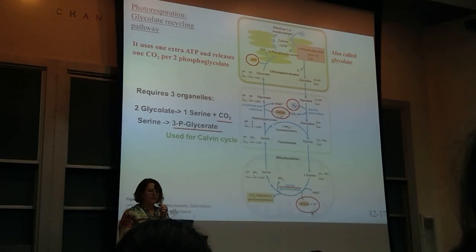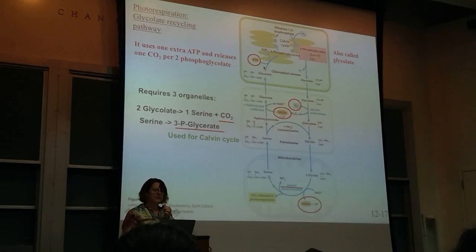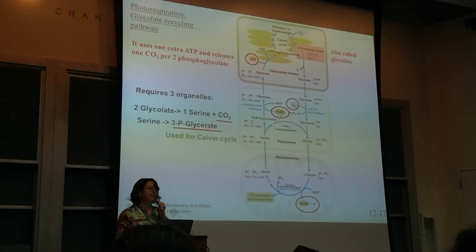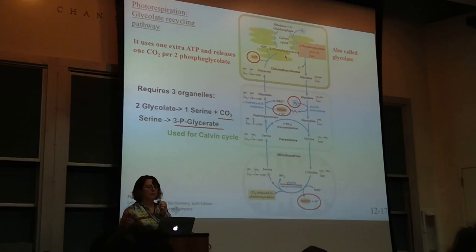When you use this pathway, you don't end up using NADH net—because here you generate it and here you use it—but you do use ATPs. You use one extra ATP whenever you do this cycle. And this is per 2 phosphoglycolates: for every 2, you end up using 1 ATP to make 3-phosphoglycerate.